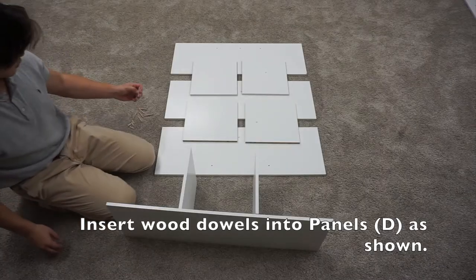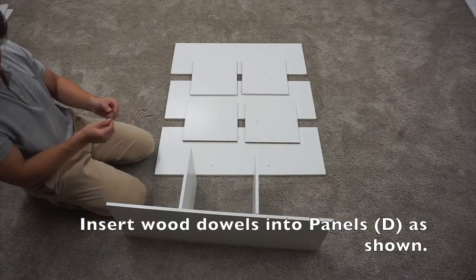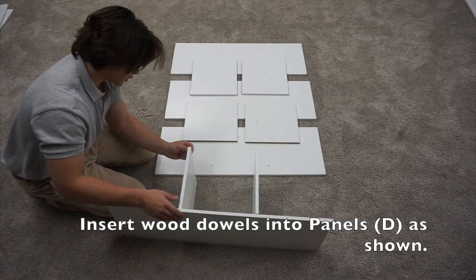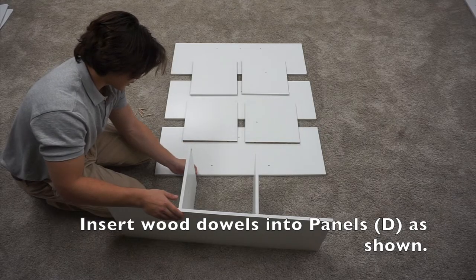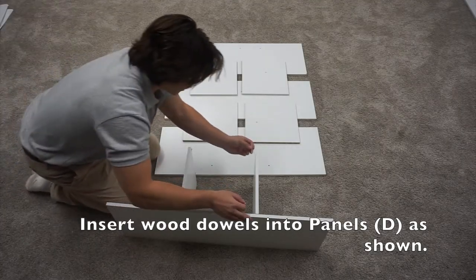Next, you want to take two of the longer dowels and insert them into a D panel, and then take two more and insert them into the other one.